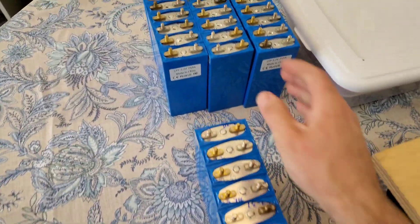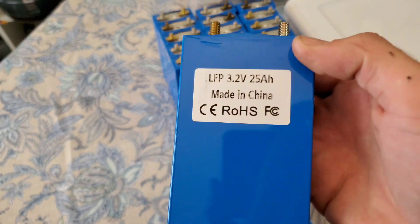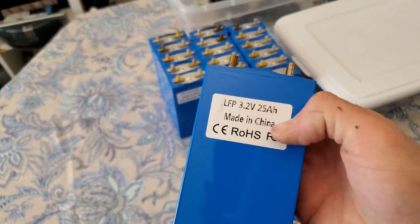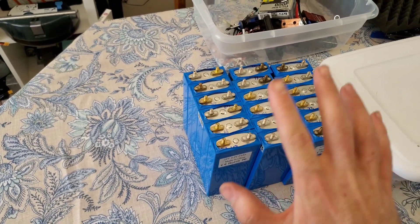I bought a bunch of these really nice cells off of Battery Hookup quite a while ago. They're 3.2 volts, 25 amp hours. So we're going to put 6 of these in parallel, 4 in series, so it's going to give us a 12-volt battery at 150 amp hours.